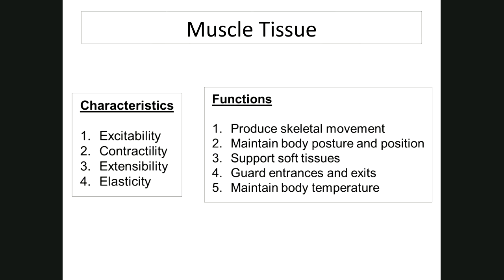You have sphincters in your urinary tract controlling urination, and some in your cardiovascular system that control blood flow to your extremities — that's why your hands and feet are sometimes cold and sometimes warm. We'll talk about that further in the cardiovascular system unit.